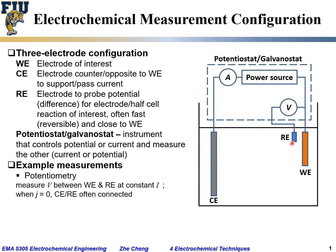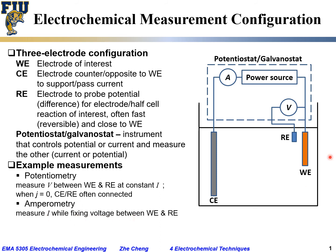In potentiometry, you measure the potential between the working and reference electrodes at constant current, sometimes zero current — then you connect the reference electrode with the counter electrode. For amperometry, you fix the voltage between the working electrode and reference electrode and just monitor the current. For voltammetry, you systematically control or vary the potential between the working electrode and reference electrode and monitor the current.